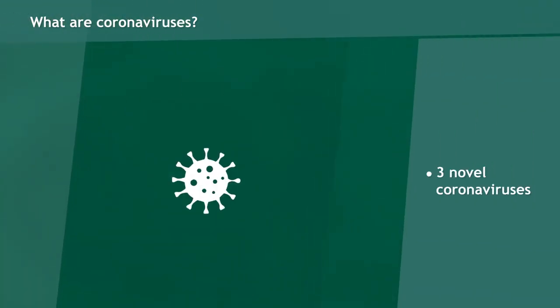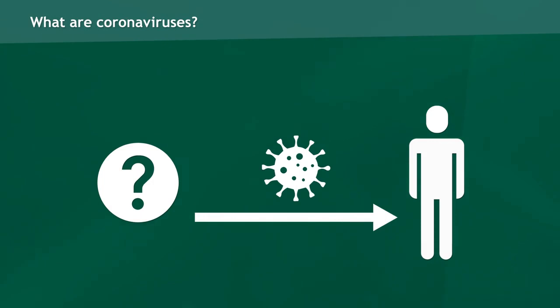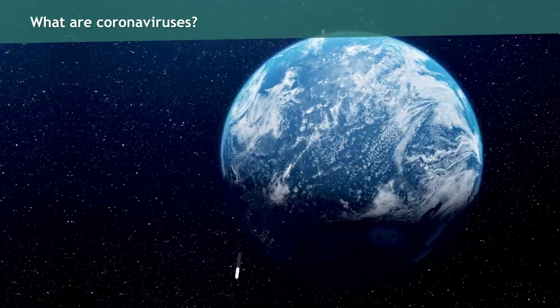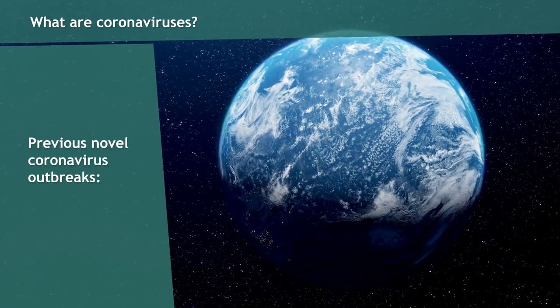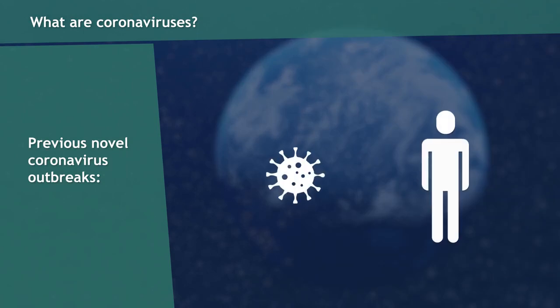Three new strains, called novel coronaviruses, are mutations that occur when the virus is transferred from animals to humans. Previous novel coronavirus outbreaks include a global outbreak of Severe Acute Respiratory Syndrome, or SARS, which resulted in 8,096 cases and 774 deaths from 2003 to 2004.